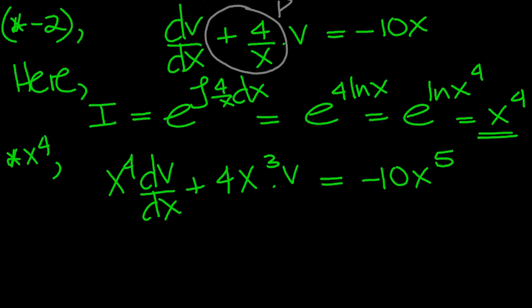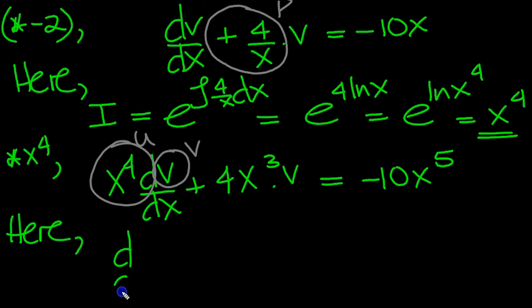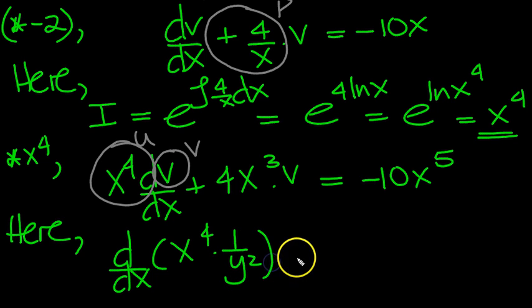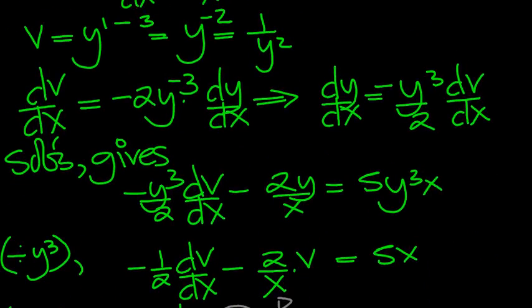And then you can circle u and v. So that's it. Here's u. Here's v. They're always in those positions. So here we see that d by dx of u times v. And v, I can write as 1 over y squared, is equal to minus 10x to the 5.